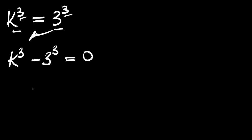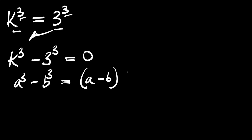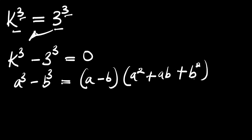Now the next thing we are going to do is apply this identity. If you have a raised to the power of 3 minus b raised to the power of 3, this equals a minus b times a squared plus ab plus b squared.